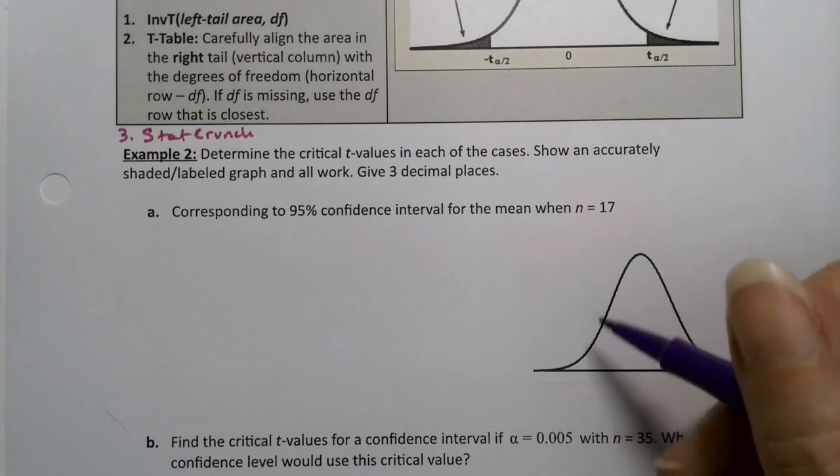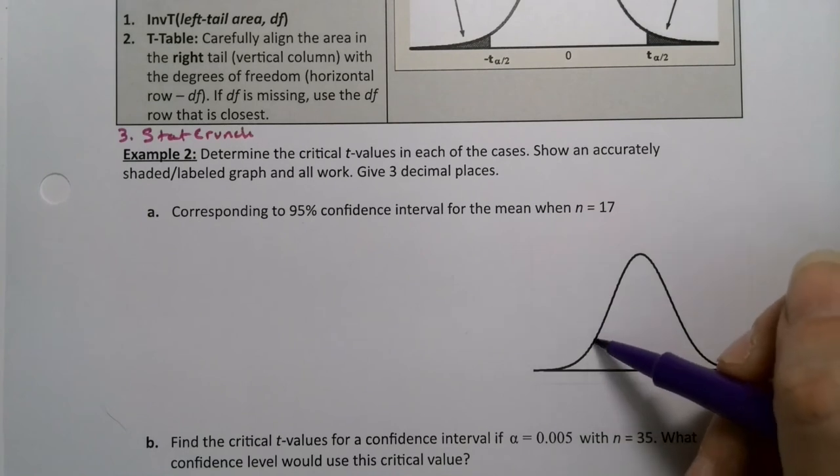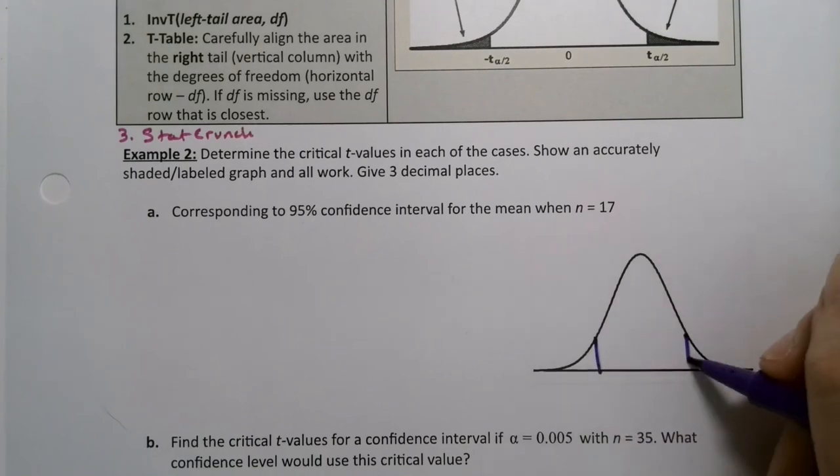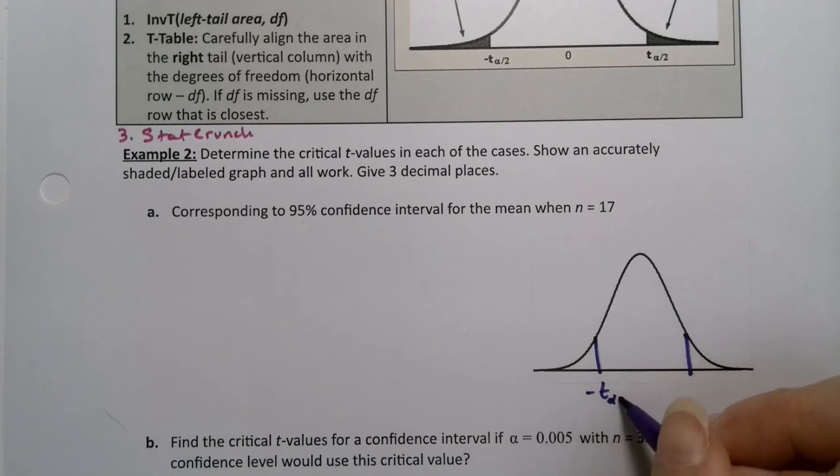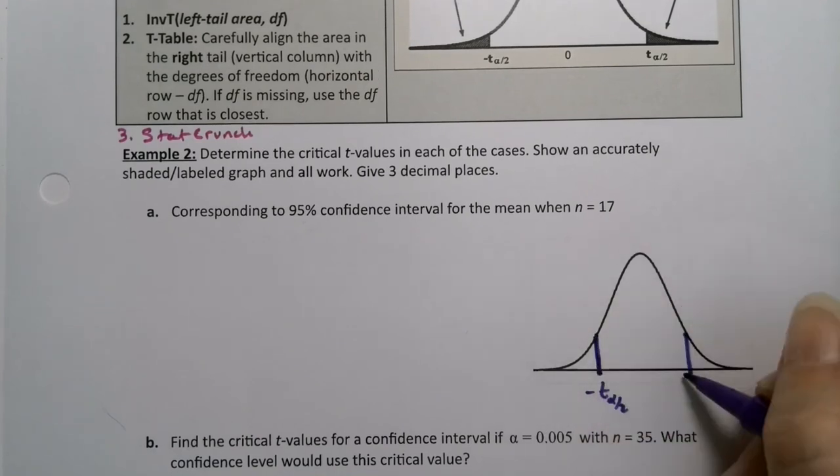So remember that the center portion is your confidence level. So if I have a negative t alpha over 2 right here, which is that vertical bar, and then positive t alpha over 2 over here, the confidence level is in the middle.